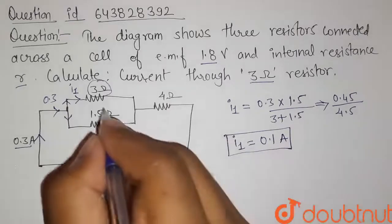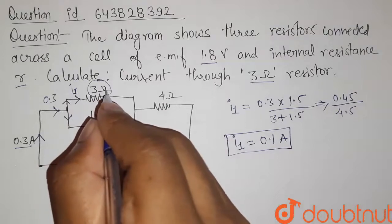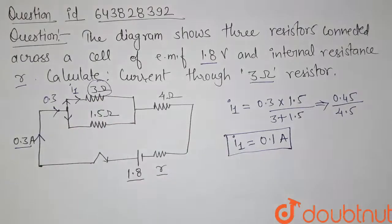So this is the value of current that is flowing through this 3 ohm resistor and that is what we have to find. So that's our solution for this question. Thank you.